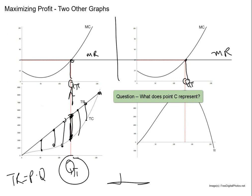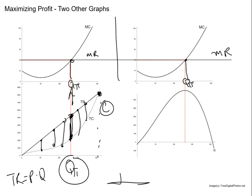On the right side I have the profit function — the difference between total revenue and total cost. Notice where the profit function is at its highest point: it's at exactly the same quantity where marginal revenue equals marginal cost. All three representations — MR=MC, the TR-TC gap, and the profit function — are entirely consistent with each other mathematically.